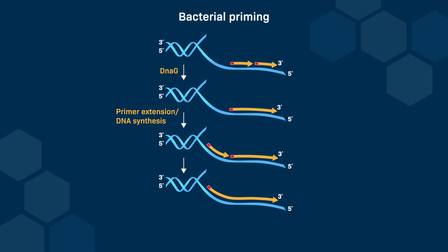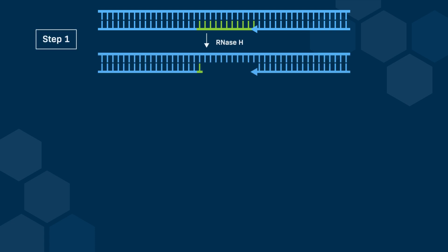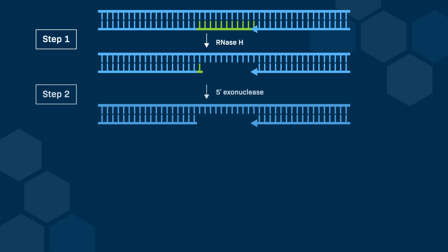This ligation is catalyzed by an enzyme called ligase. Let's take a closer look at the removal of the RNA primer. The new elongating Okazaki fragment is on the right and the pre-existing Okazaki fragment is on the left. The RNA portion of the pre-existing Okazaki fragment is shown in green. RNase H is an enzyme that digests the RNA primer, which leaves only one ribonucleotide at the 5' end of the primer. A second enzyme with 5' exonuclease activity removes this remaining ribonucleotide.